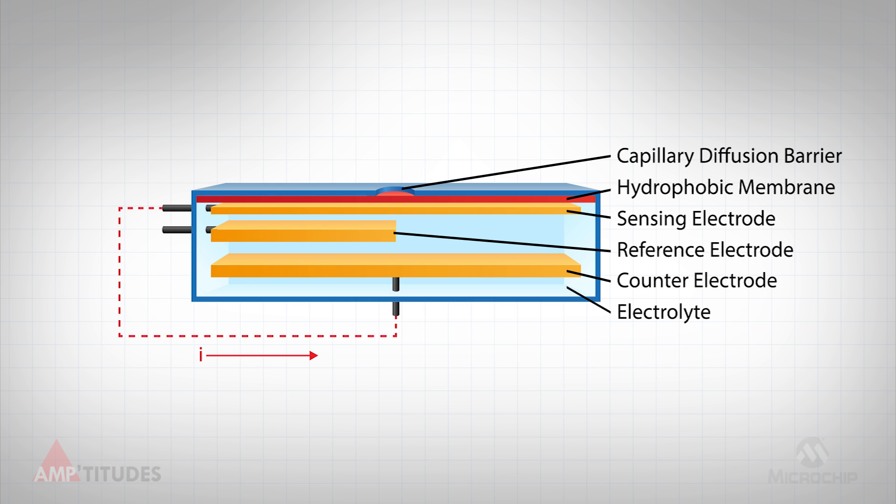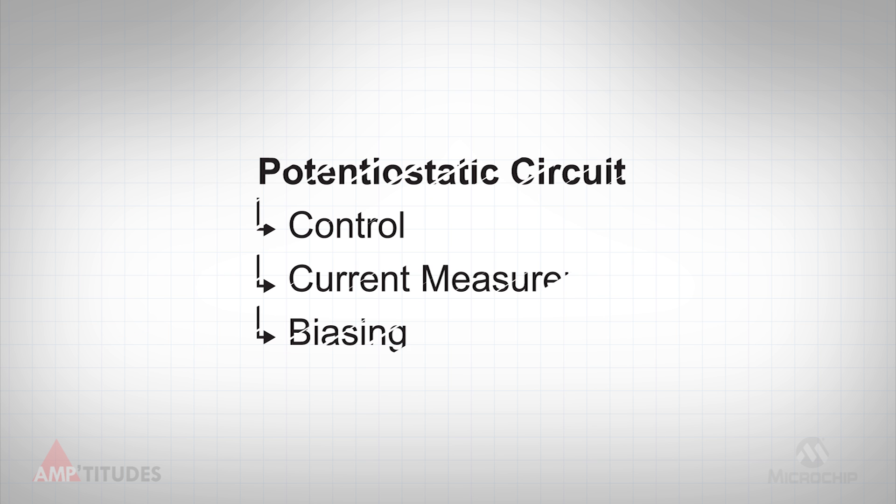The reference electrode is used to provide a stable voltage potential for the sensing electrode to maintain good linearity and minimize sensitivity to interfering gases. External circuitry is required to properly measure the current that flows between the electrodes and to provide control for the sensor. This circuitry is called a potentiostatic circuit and serves three main functions: control, current measurement, and biasing.